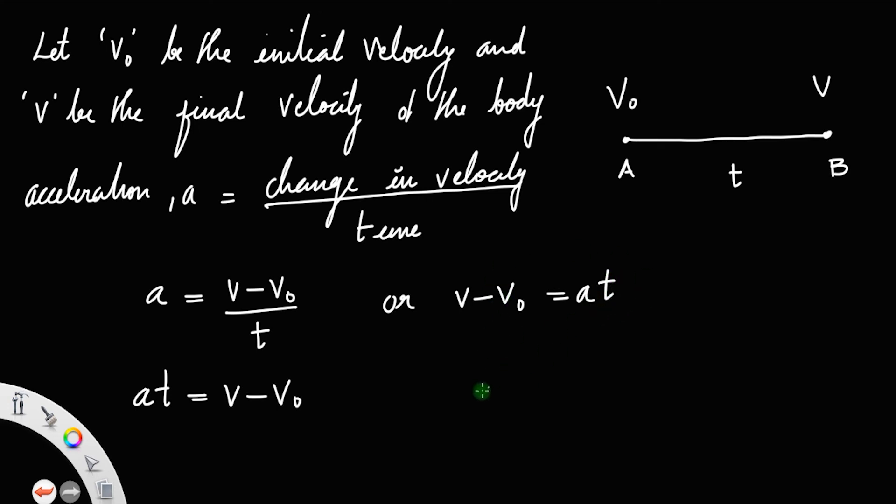Taking v0 to the right, you get v = v0 + at. This is the first kinematic equation of motion.